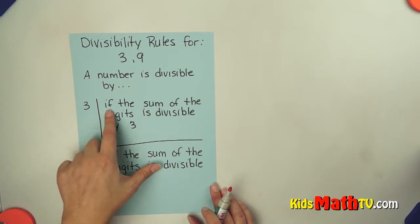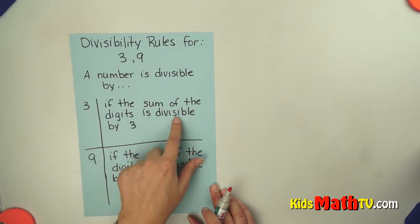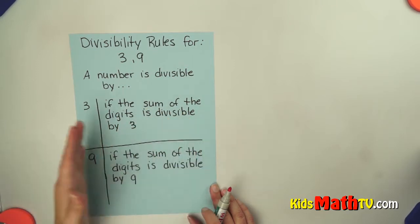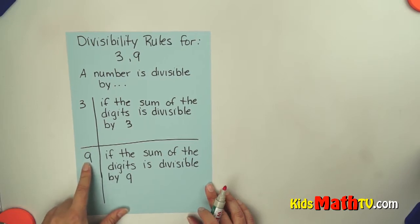What we do is add up the digits. For 3, if the sum of the digits is divisible by 3, the whole number is divisible by 3. Similarly, if the sum of the digits is divisible by 9, the whole number is divisible by 9.